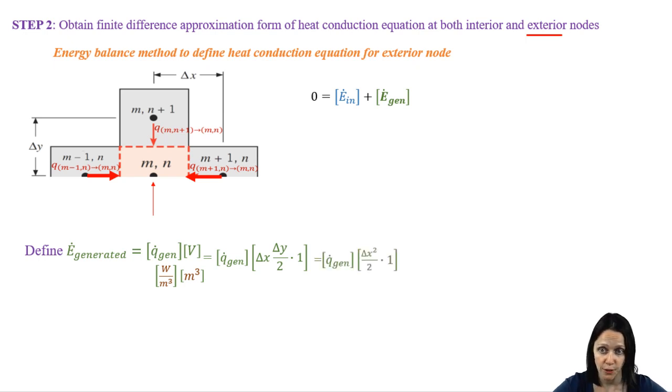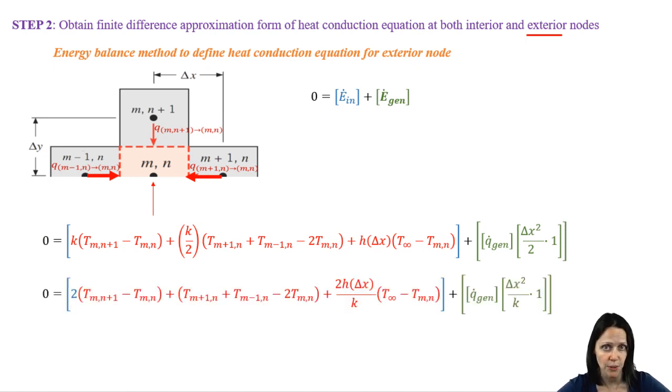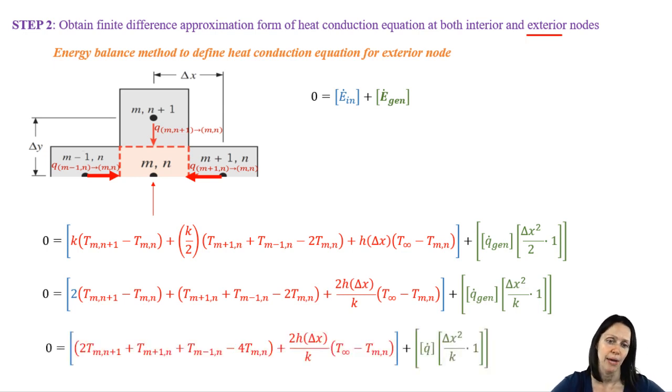And if we did like we did when we were defining the rate of heat transfer into the control volume and say that delta X and delta Y are equal to one another, in other words, the node spacing is equal, we get an even more simplified equation. So let's add everything together. And now we multiply everything by two and divide by K just to simplify the equation a bit more. Finally, we combine a few more terms and we have an even cleaner expression for the energy balance of that exterior node.